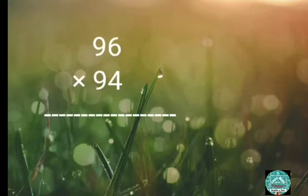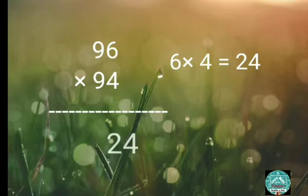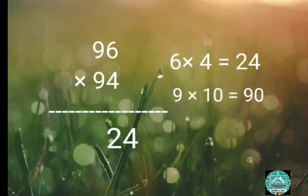Multiply 96 by 94. Multiply one's digits: 6 times 4 equals 24. Multiply 9 by its successor, that is 10: 9 times 10 equals 90. So the answer is 9024.